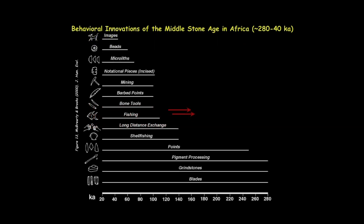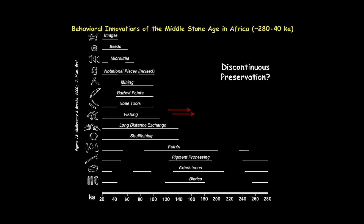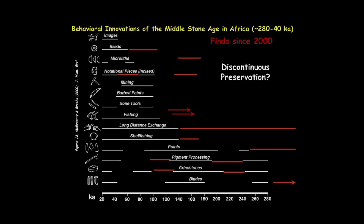This is a graph we published in 2000. We had an end date of 280,000 years ago because we thought at the time that was the beginning of the Middle Stone Age. But since then we ourselves have proved that was incorrect. What the red lines show is how far back these things now extend — considerably before 280,000 years ago in many cases.